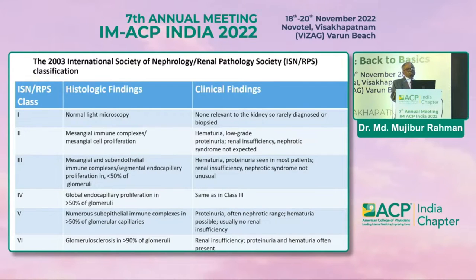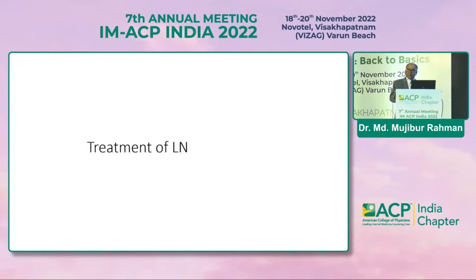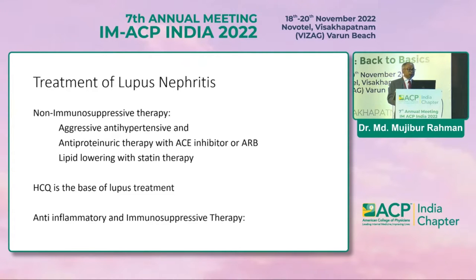In my presentation, I will concentrate on classes 3, 4, and 5 of lupus nephritis. Treatment of lupus as a whole was very gloomy during the last century, but with the advent of prednisolone and potent anti-inflammatory drugs, it has shown some light after the 1950s. I will be covering anti-inflammatory and immunosuppressive treatment.